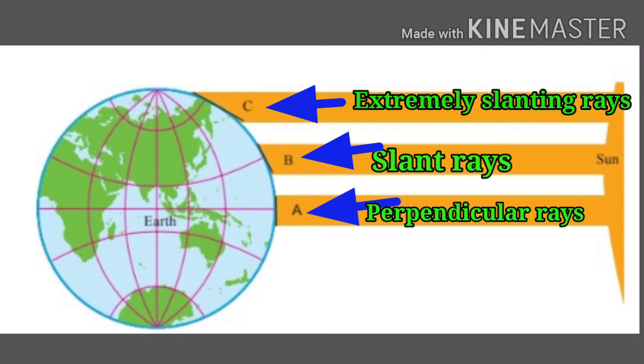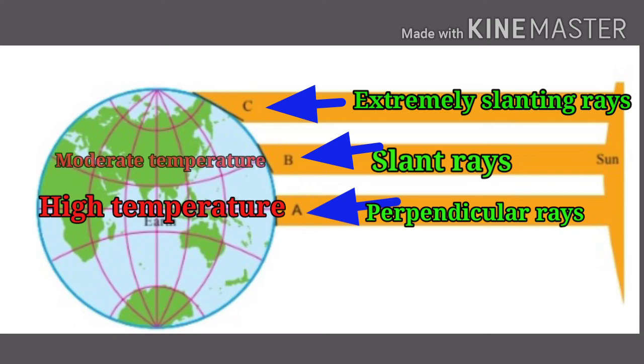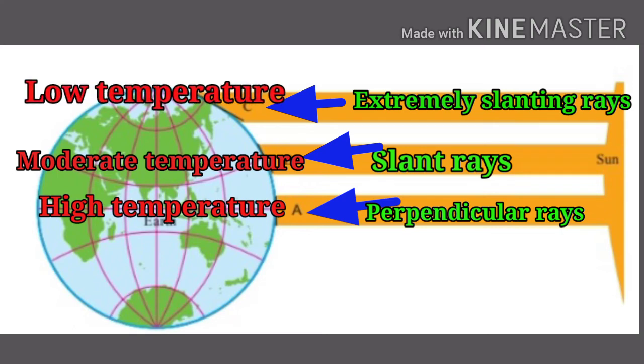The temperature will be high in the regions receiving perpendicular sun rays. The temperature will be moderate in the regions receiving slant rays. The temperature will be low in the regions receiving extremely slanting sun rays.